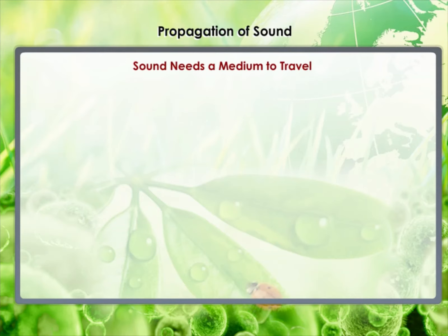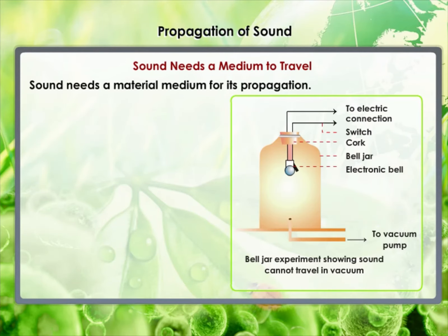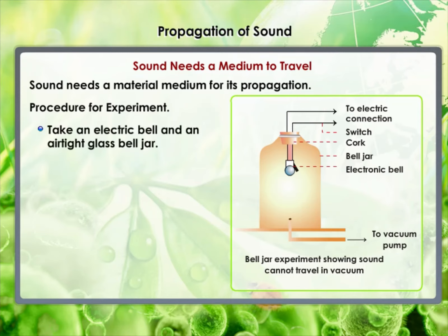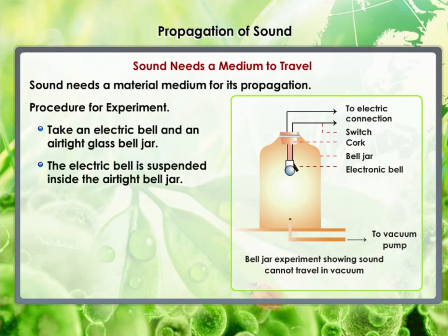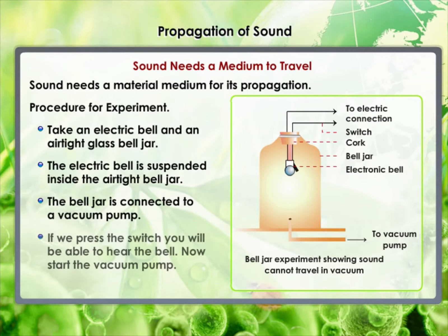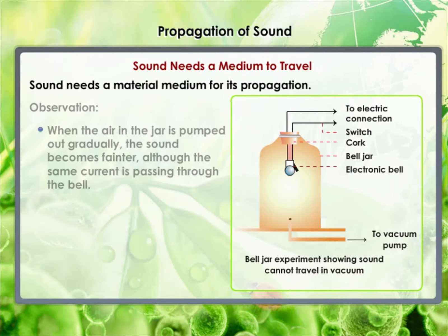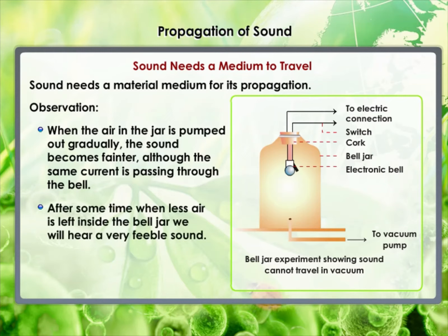Sound needs a medium to travel. Sound is a mechanical wave and needs a material medium like air, water, or steel for its propagation — it cannot travel through vacuum. This can be demonstrated by an experiment: take an electric bell and an airtight glass bell jar. The electric bell is suspended inside the jar connected to a vacuum pump. When you press the switch, you can hear the bell. When the air is pumped out gradually, the sound becomes fainter — although the same current is passing through the bell. After some time, when less air is left inside, we will hear a very feeble sound.